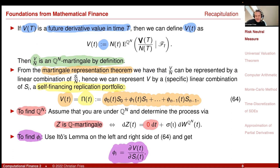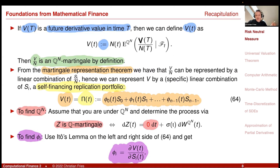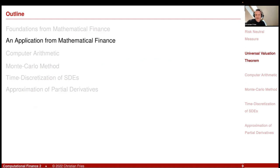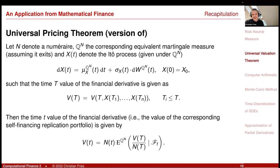We now have a very nice method of calculating the value of a financial derivative. Step one: find the measure Q — this is just the martingale property. Step two: calculate the expectation. This result is called the universal pricing theorem or universal valuation theorem. I have a numeraire and a corresponding equivalent martingale measure, and under that measure I look at my model describing market quantities as Itô stochastic processes.